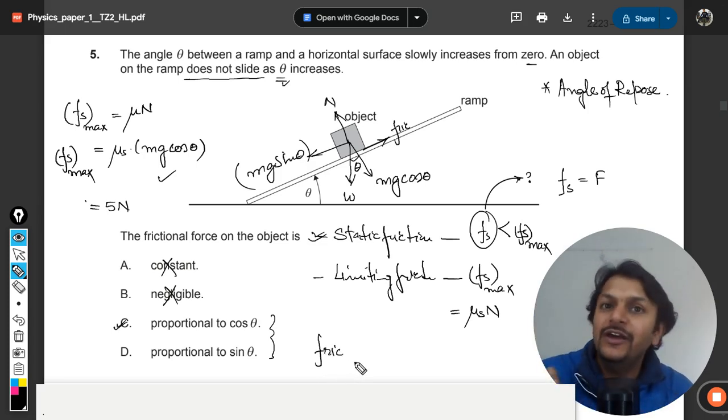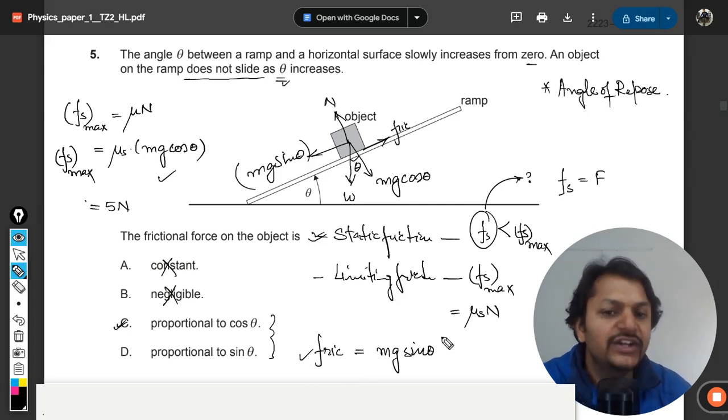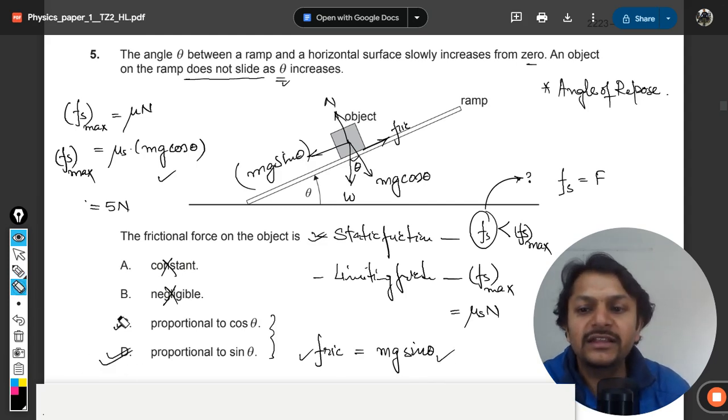What does it mean? It means that the friction which is instantaneous friction which is acting now, we don't even have a clue about it. That friction is actually equal to the force which is trying to disturb the equilibrium, which is mg sin theta. So this friction is directly proportional to sin theta.